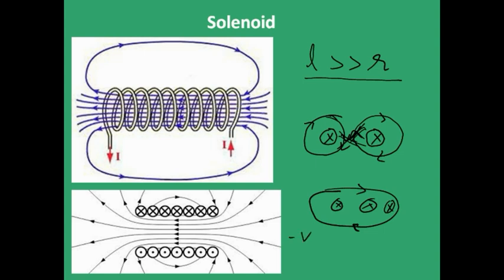When it is closely wound, the solenoid has magnetic field lines something similar to this. Observe that the magnetic field lines are bent when you reach the end of the solenoid. That is why I took the length of the solenoid to be very long, almost infinity — so that when I am dealing with the central part of the solenoid, I can consider the magnetic field lines to be straight and the magnetic field to be constant, pretty much.